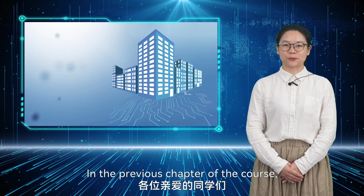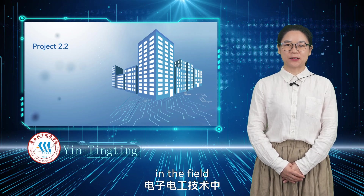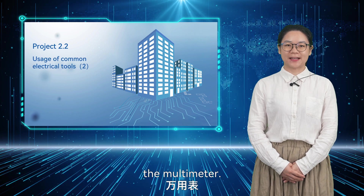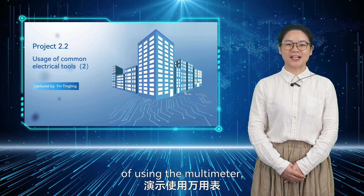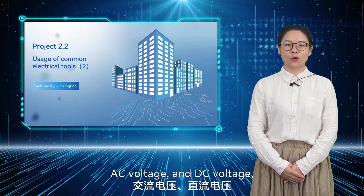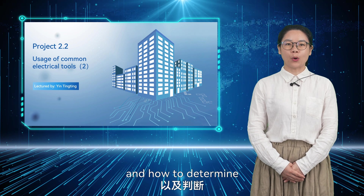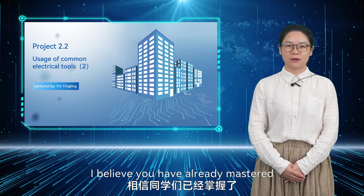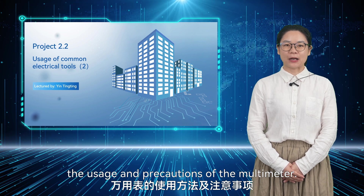In the previous chapter of the course, we got acquainted with the most widely used instrument in the field of electronics and electrical technology, the multimeter. By watching the demonstration of using the multimeter, we learned how to measure resistance, AC voltage, and DC voltage, and how to determine the continuity of a conductor. I believe you have already mastered the usage and precautions of the multimeter.